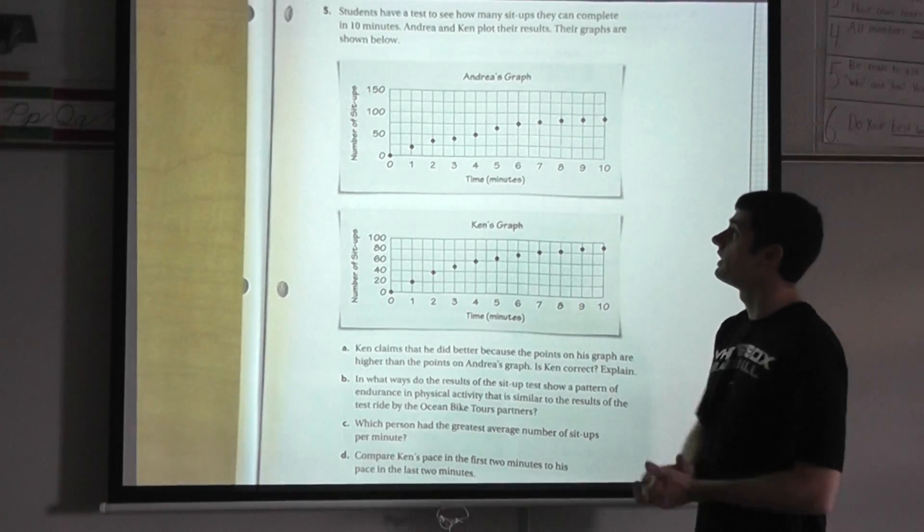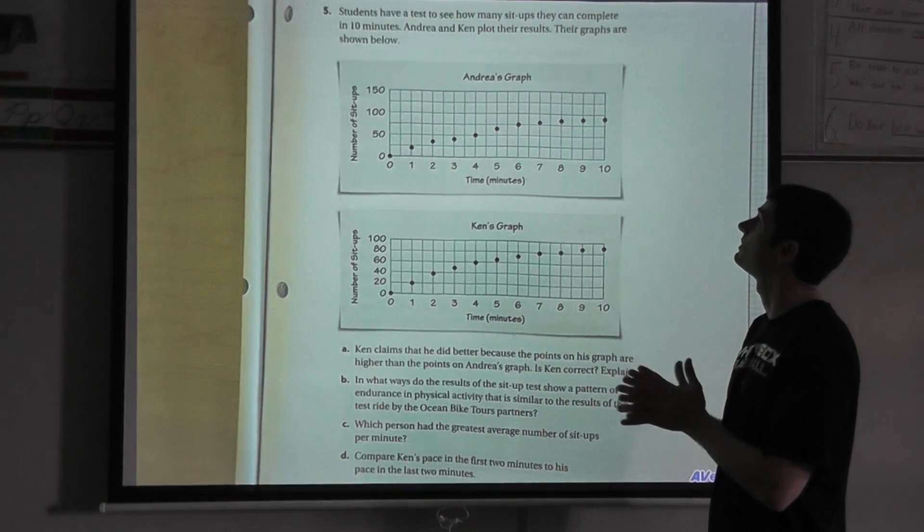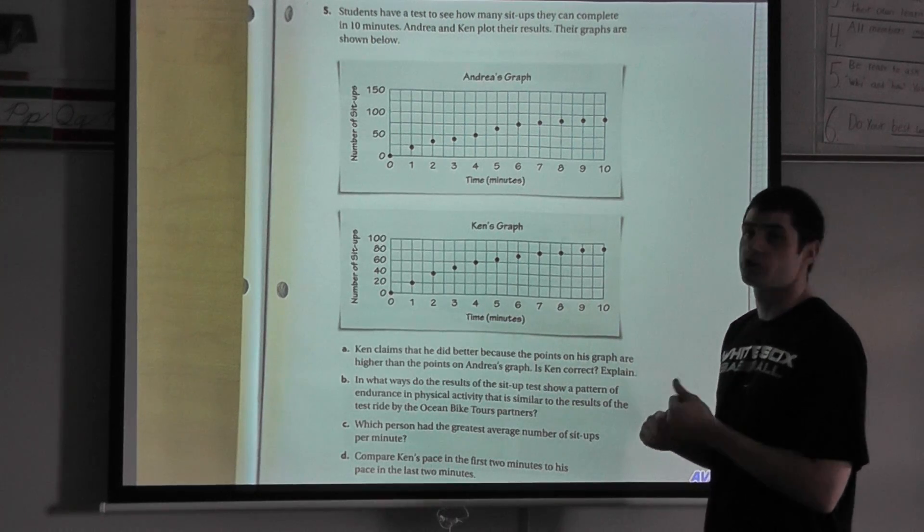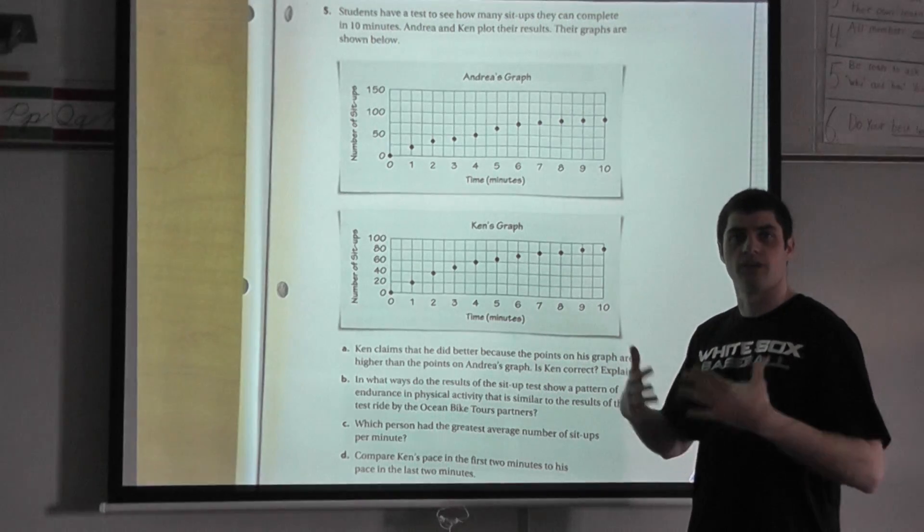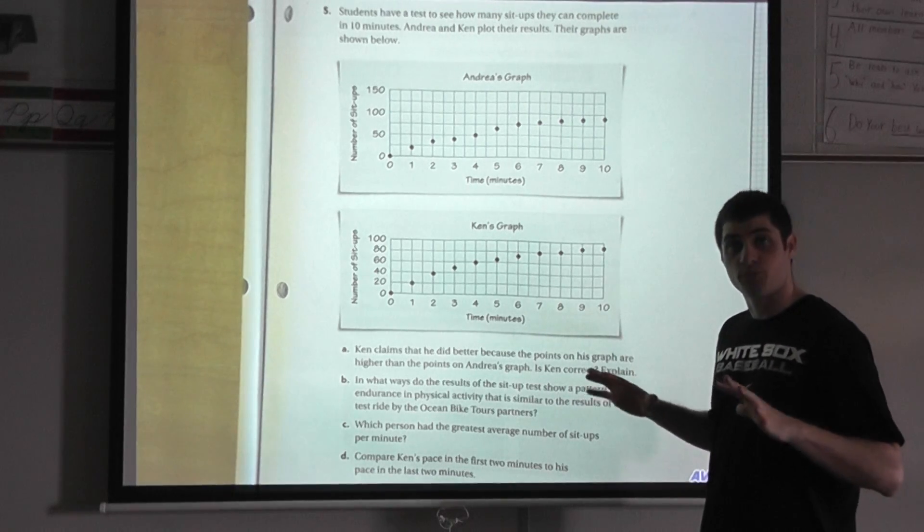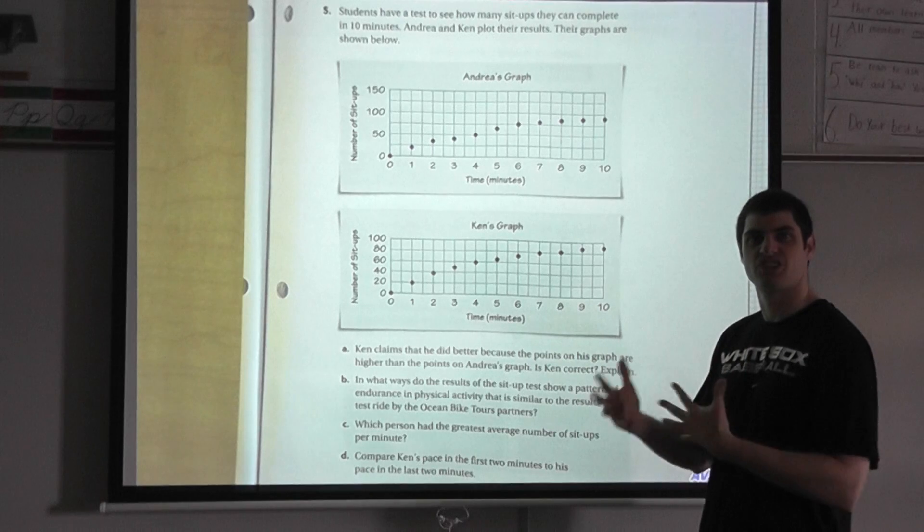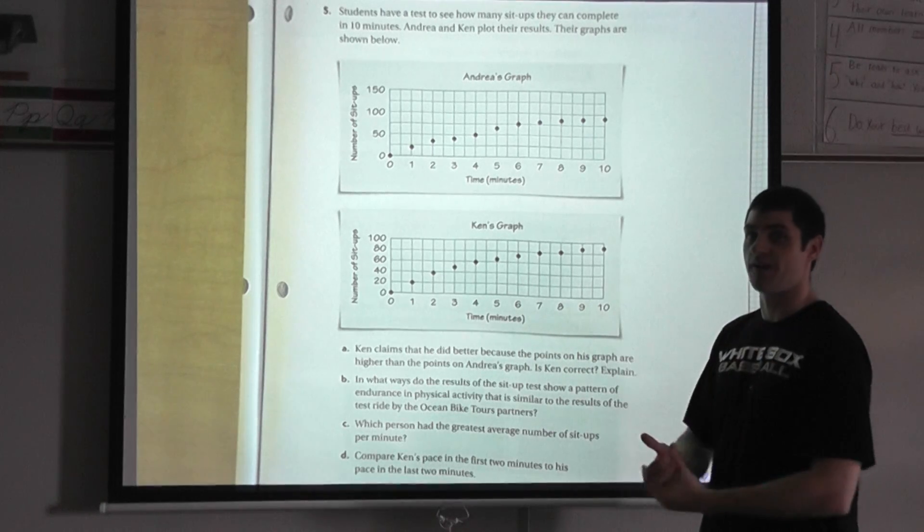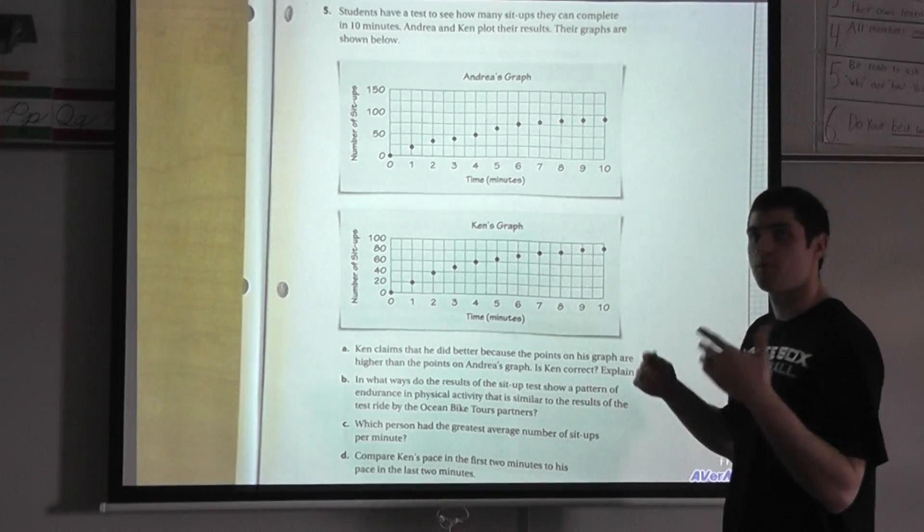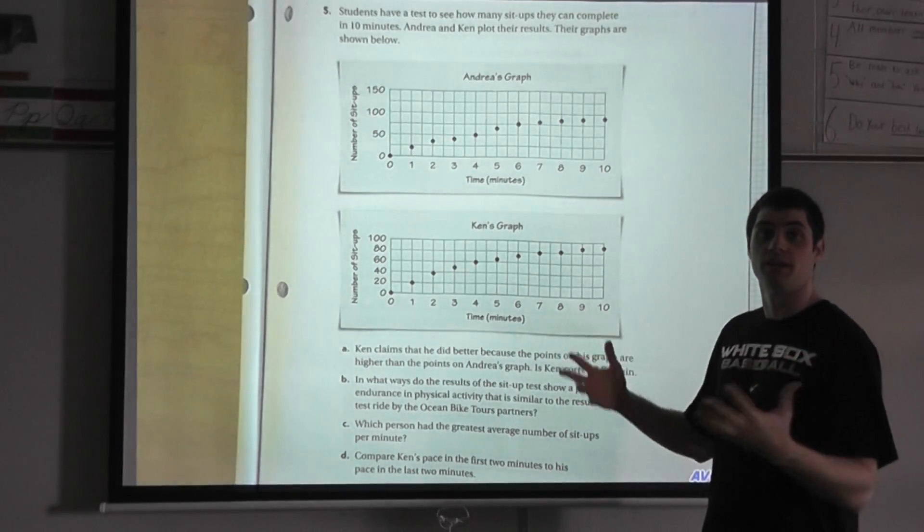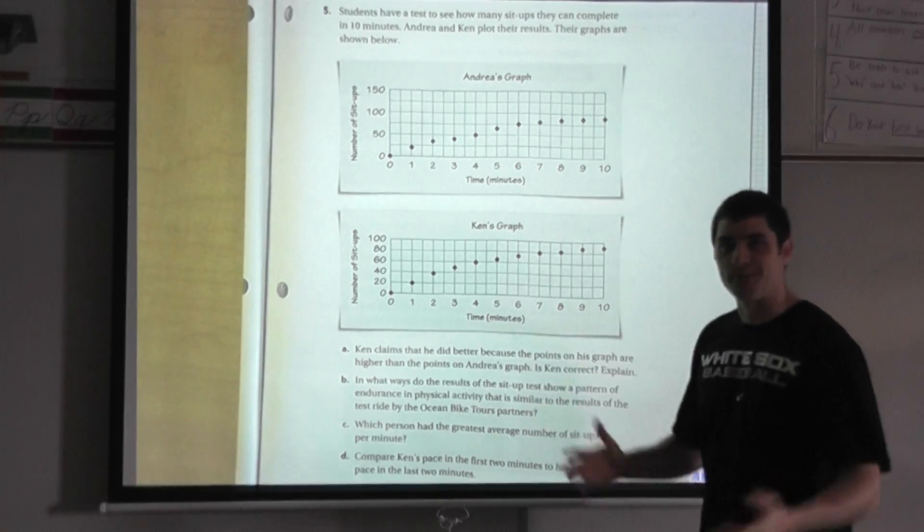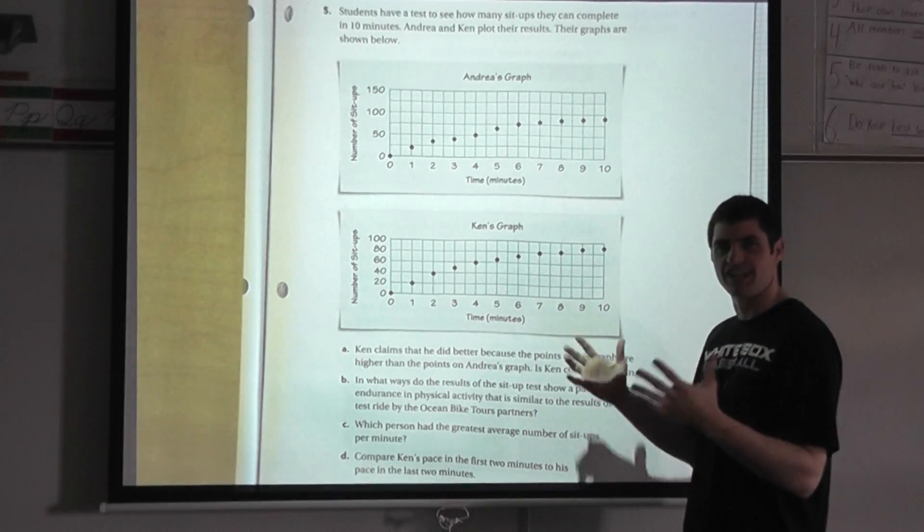In problem five, students have a test to see how many sit-ups they can complete in 10 minutes. Andrea and Ken plot the results. Their graphs are shown below. Think of like gym class, when you do your pull-ups or sit-ups or push-ups or the pacer test. These are all things you can actually take your results and graph them and use that data to show your rate - how many push-ups you do per minute, how many laps you can do per minute as part of your rate as well.